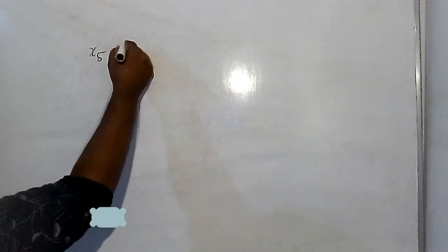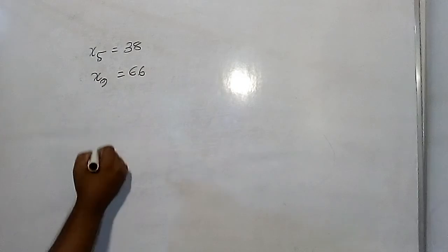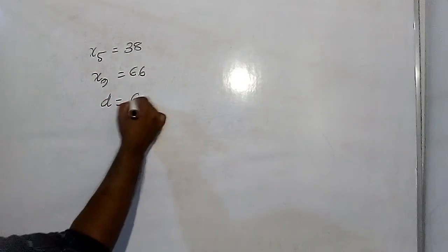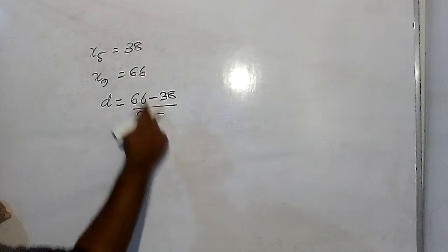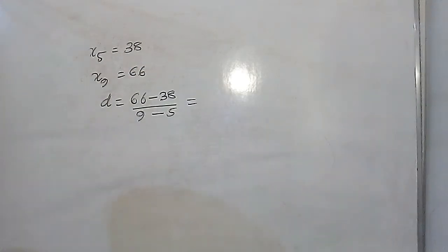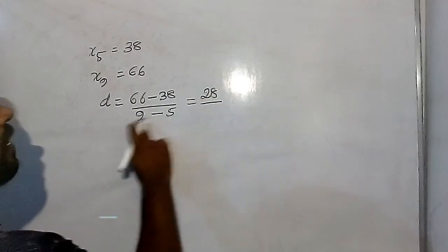The 9th term is 66. So the difference is 66 minus 38, which is 28, divided by 4, giving us a common difference of 7.